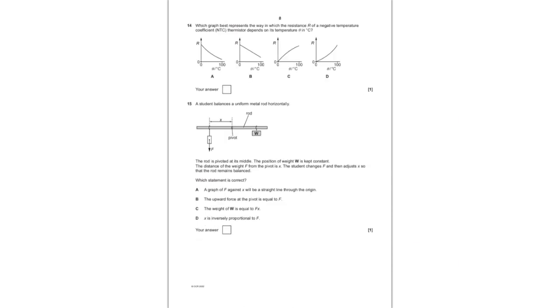For question number 14, we are given a bunch of graphs and we are asked to figure out which graph represents the relationship between the resistance of an NTC thermistor with respect to the temperature. We all know that as the temperature increases, the resistance decreases and A will be the answer as it's not a linear decrease.